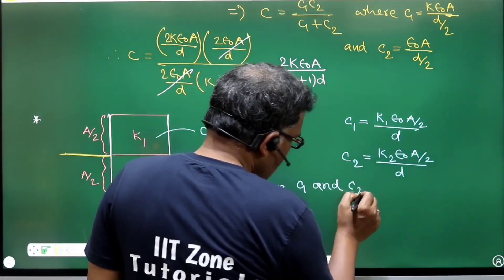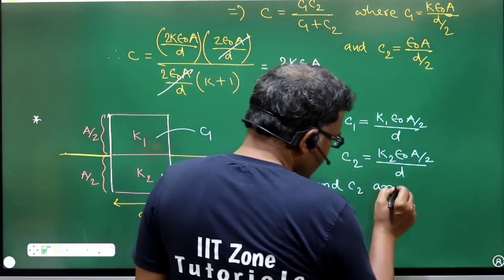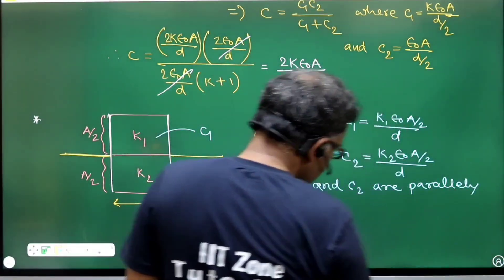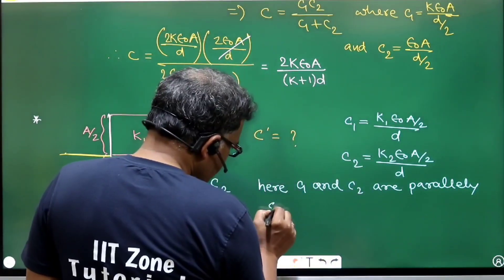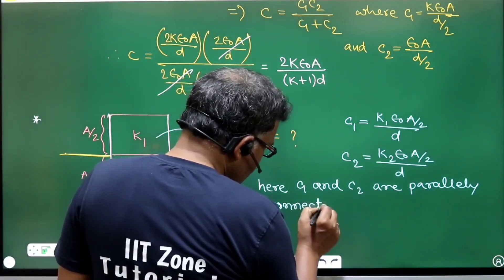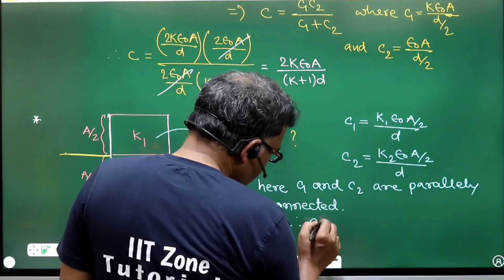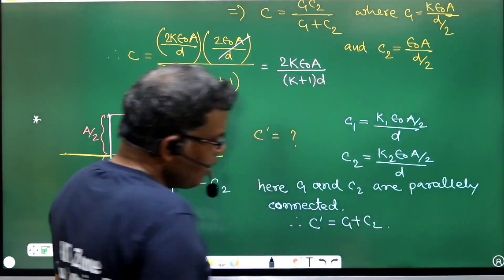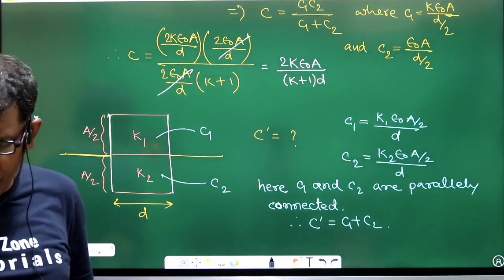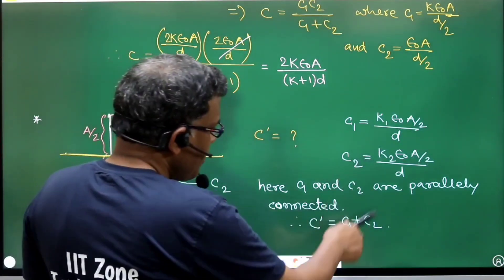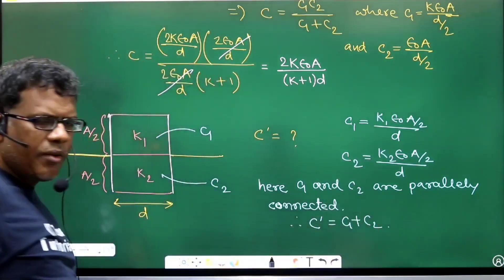In this arrangement, C1 and C2 are connected in parallel. Therefore, the effective capacitance C_eff = C1 + C2. Substituting the individual values of C1 and C2 and simplifying gives the final result.